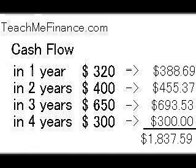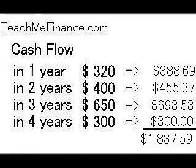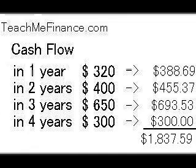You add up all these numbers and it comes out to a total of $1,837.59. So four years from today, you will have $1,837.59. And that is the future value of your uneven cash flow.